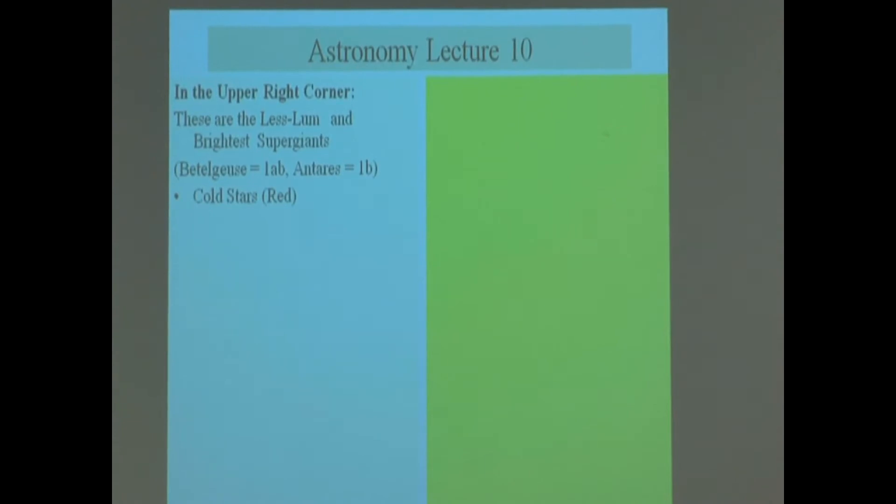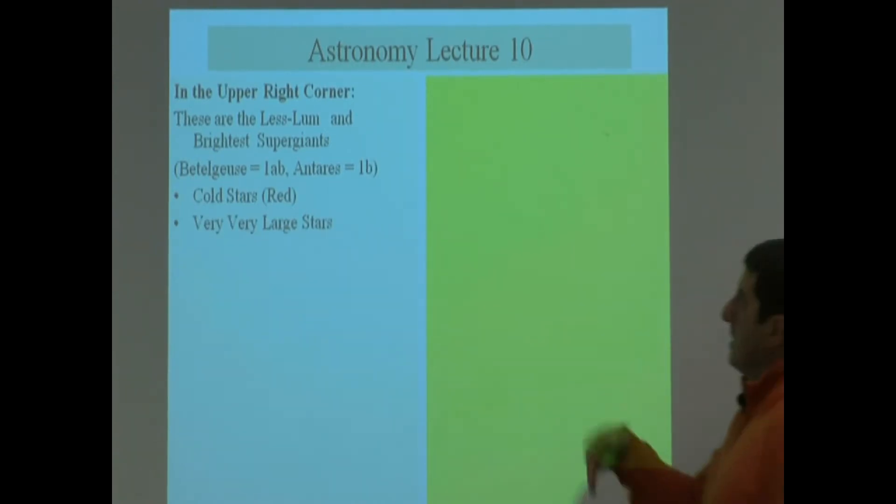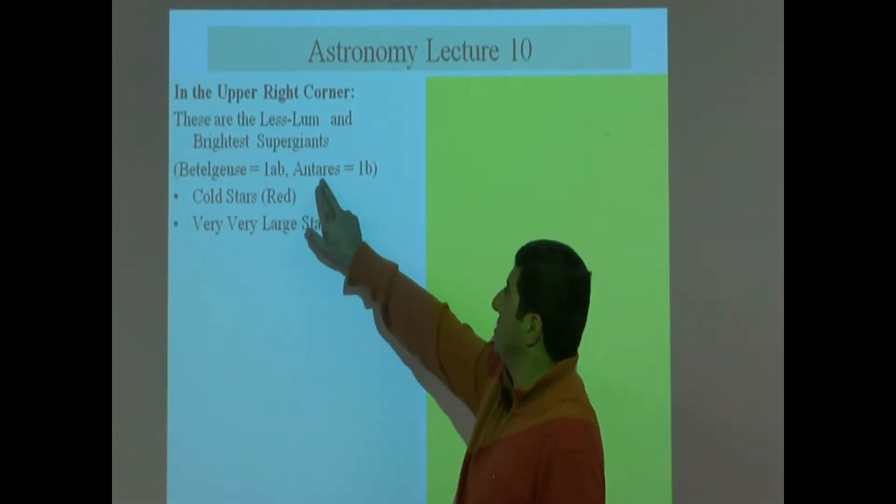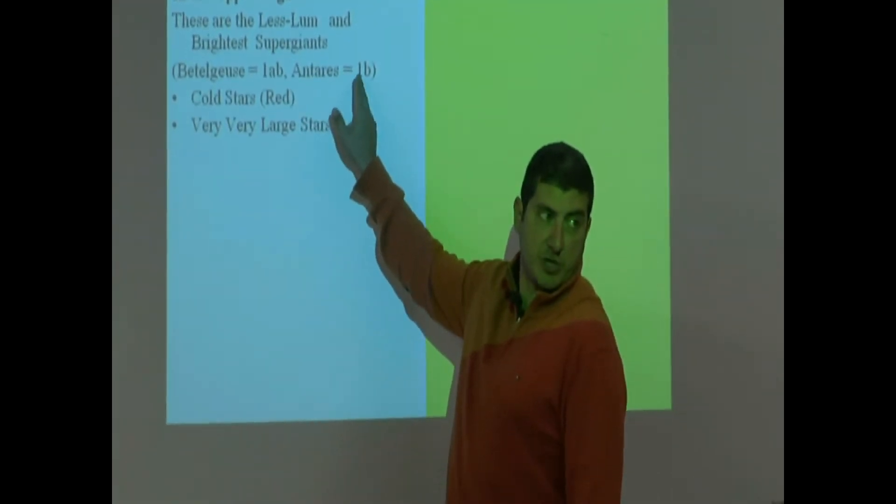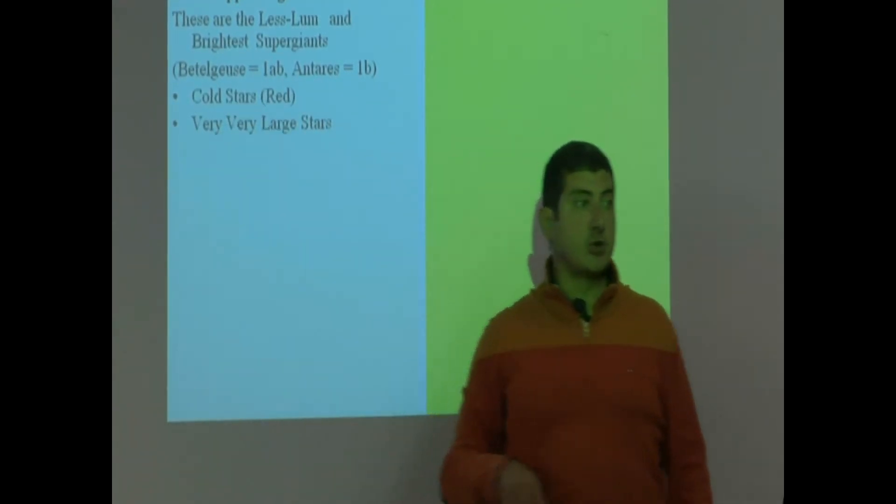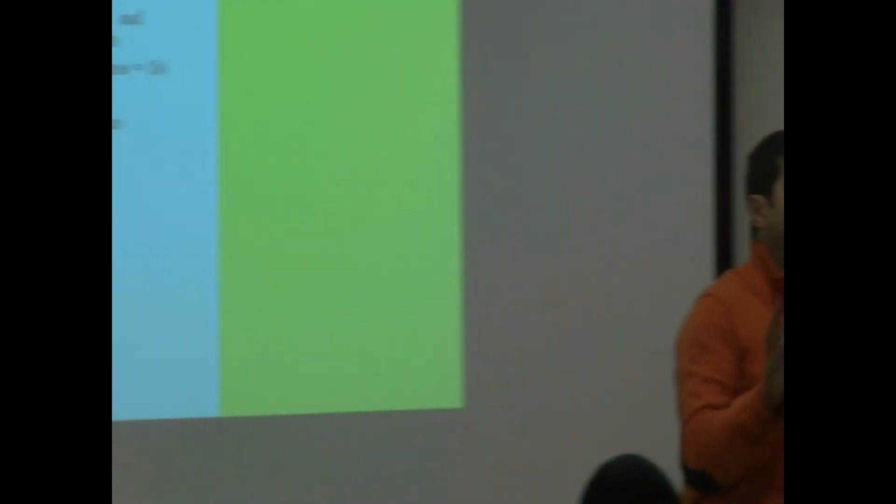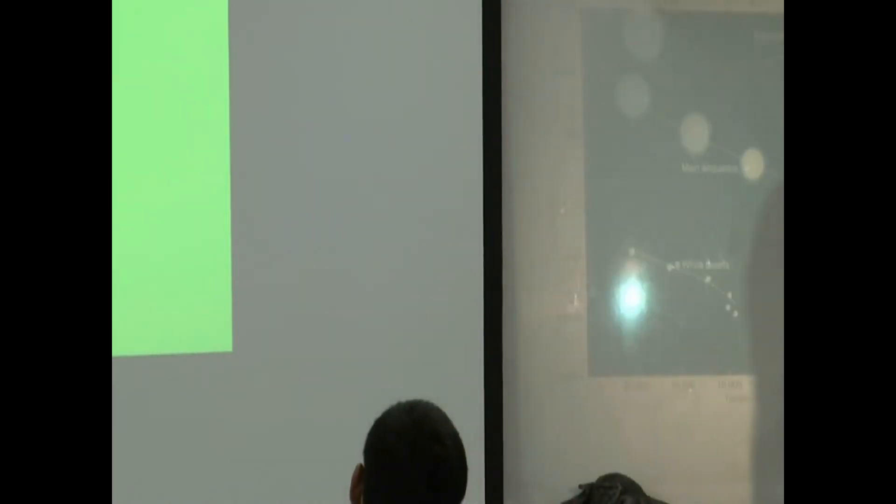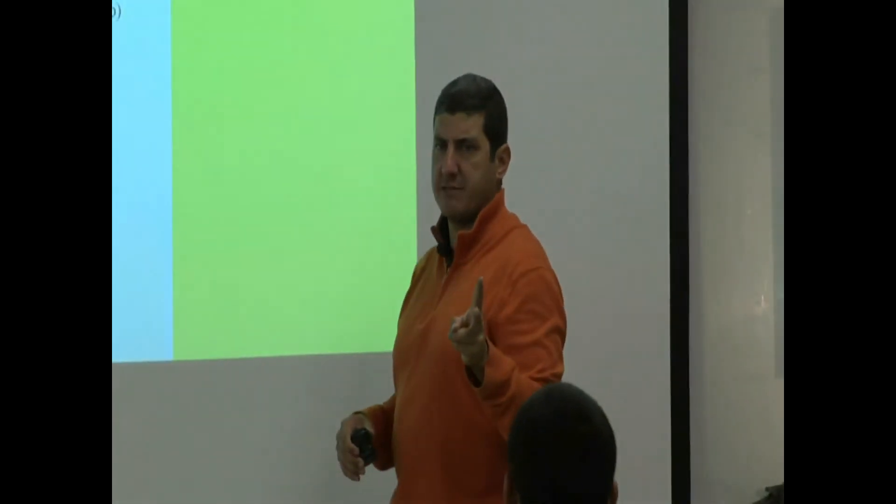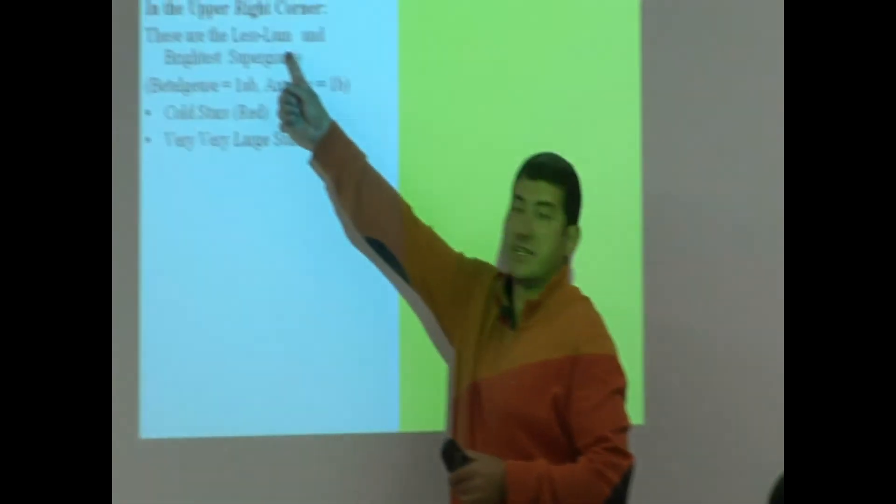In the upper right corner, these guys here, supergiants. What do we expect of them? Well, examples of those will be Betelgeuse, which is a 1a, and Antares 1b, less luminous supergiant. And this one is a supergiant bright supergiant. What do we expect them to be? Well, we still expect them to be cold. You see, on this side is cold. That's something that often students get wrong when I've asked them because they think that these guys are bright so they should be hot.